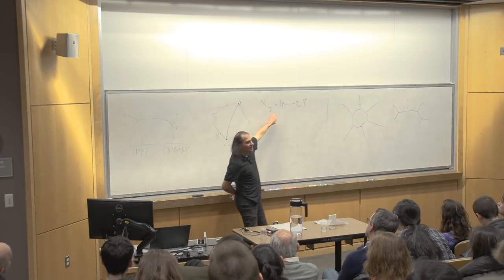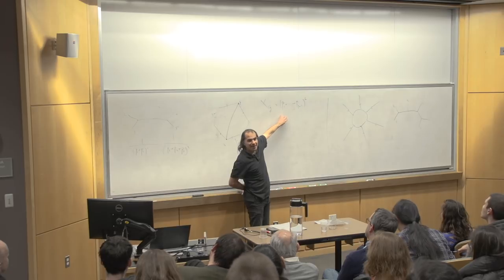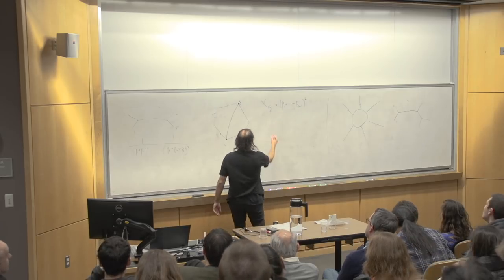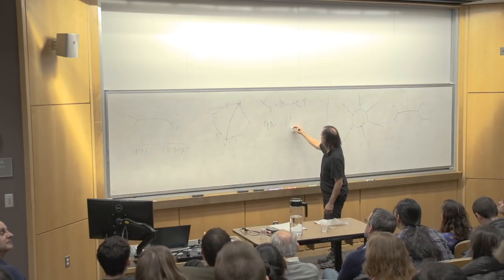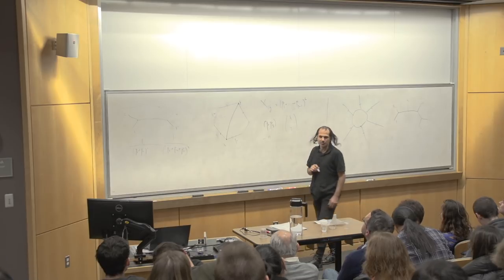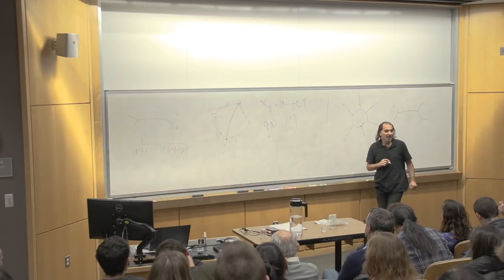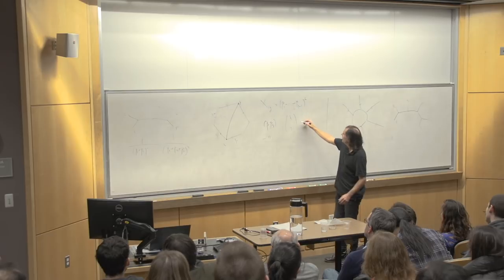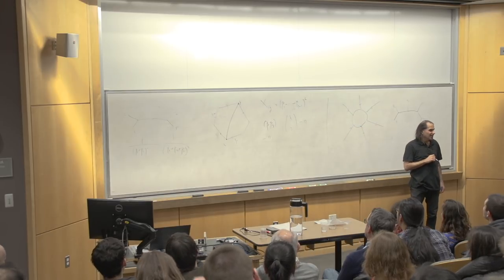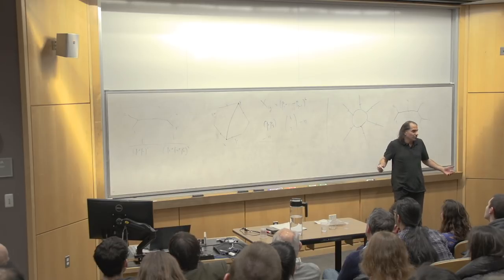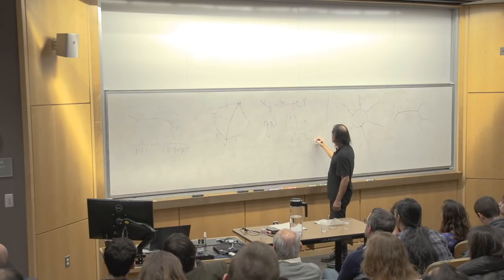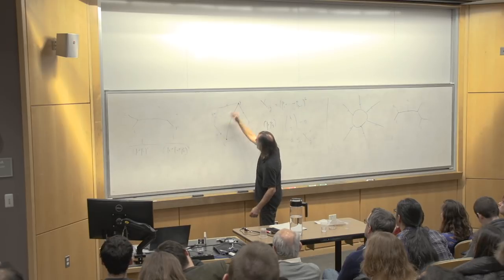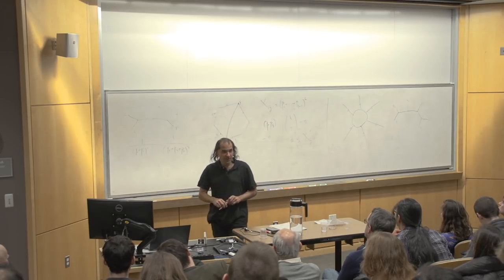How many Mandelstam invariants are there? At n points, there's all the p_i dot p_j — that's n-choose-two of them, minus n for momentum conservation, since the sum over p_j equals zero. So the number of independent Mandelstam invariants is n-choose-two minus n. That's also the number of chords of a polygon, exactly equal to the number of x_ij's — all the chords excluding the adjacent sides.